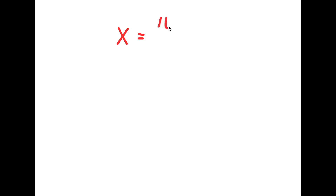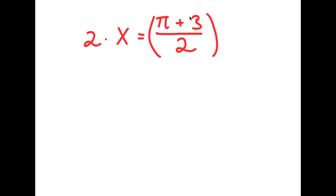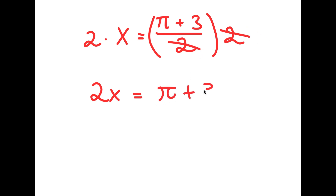So what I'm first going to do is start with the statement: x is equal to pi plus 3 over 2. All I'm doing is giving a value to a variable, which is completely legal. Now I'm going to multiply both sides by 2. So I get 2 times x is equal to pi plus 3 over 2 times 2. Now 2x is equal to — these two twos cancel out — pi plus 3.